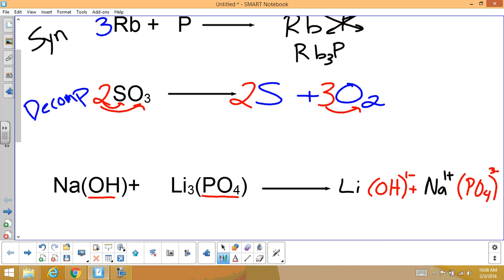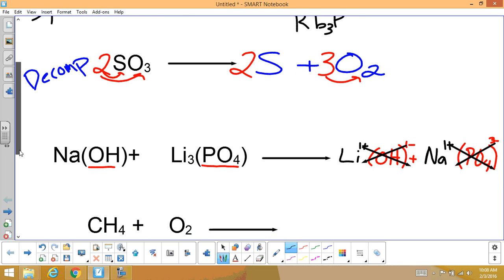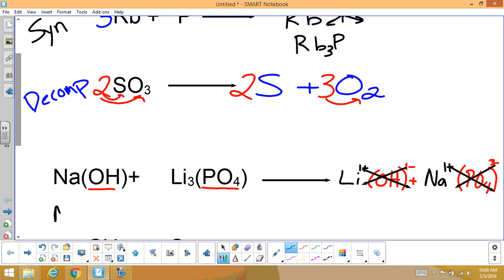So we come over here to our product side, we've got to put the one plus. So we've got all the elements, we've got all the charges, now we're just crossing over. And to rewrite it to make it a little bit neater, this is NaOH hasn't changed, plus lithium phosphate yields lithium hydroxide, my apologies, plus sodium phosphate.